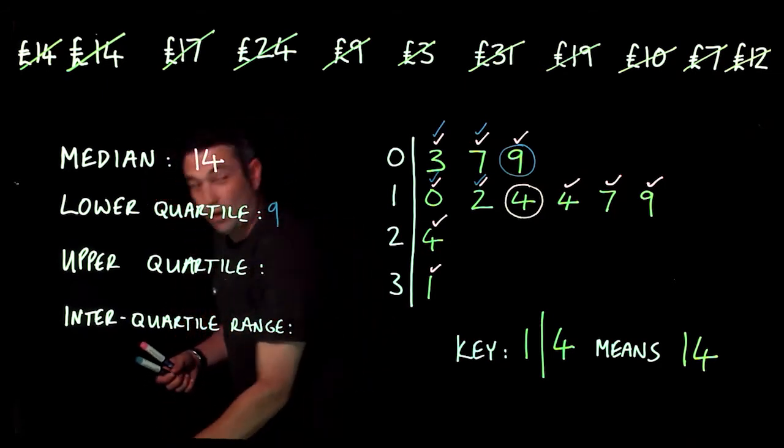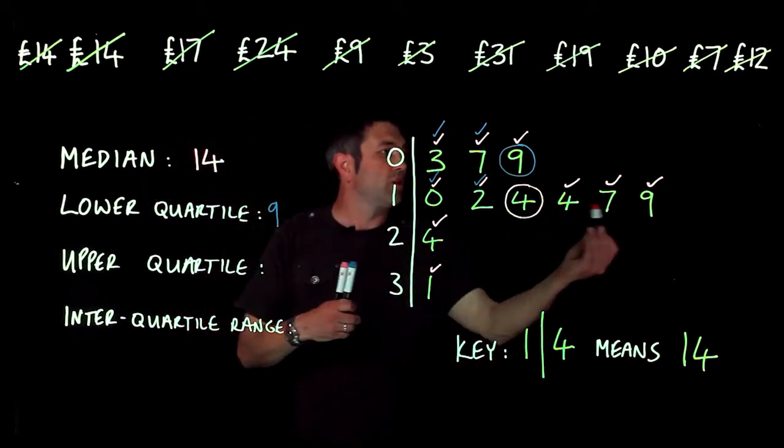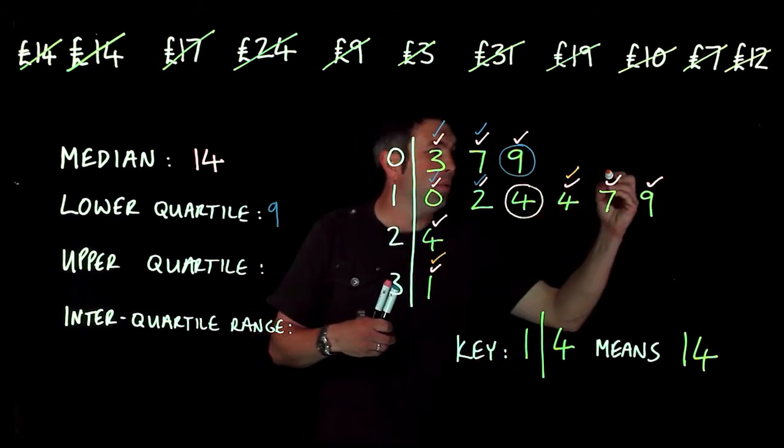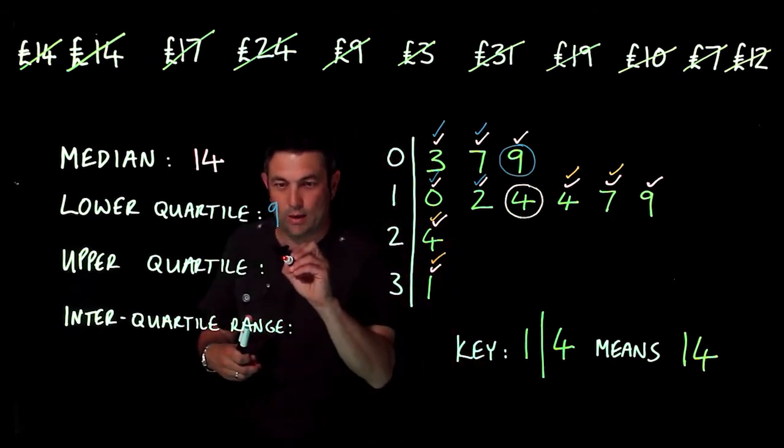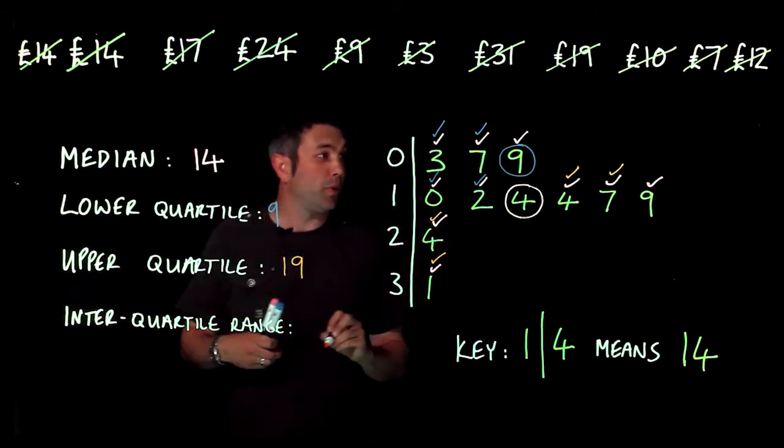Grabbing another color, we're doing the same with this side—crossing off one from the beginning and one from the end—and we end up with 19 as the upper quartile.